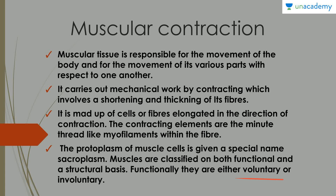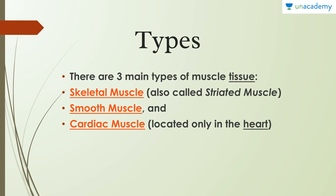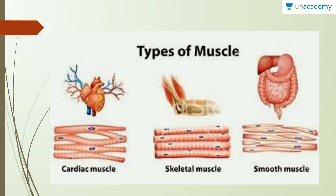Functionally, muscles are either voluntary or involuntary. Diagrammatically, we're going to cover all three types: there are three main types of muscles — skeletal muscle, smooth muscle, and cardiac muscle, which is located in the heart.